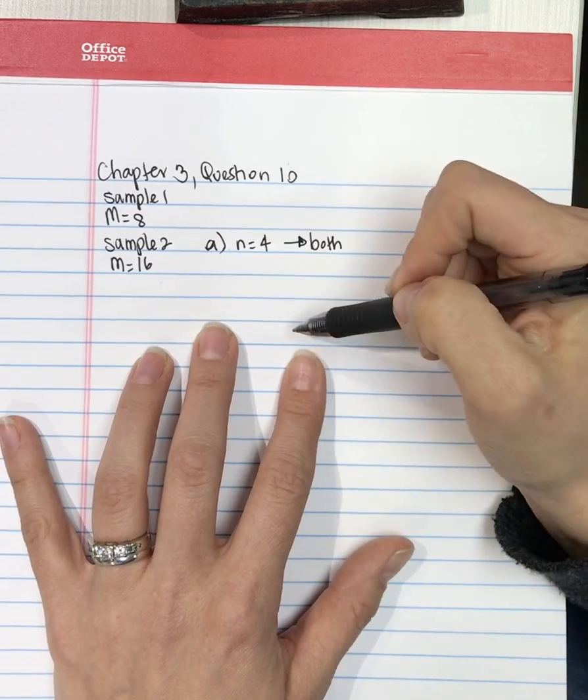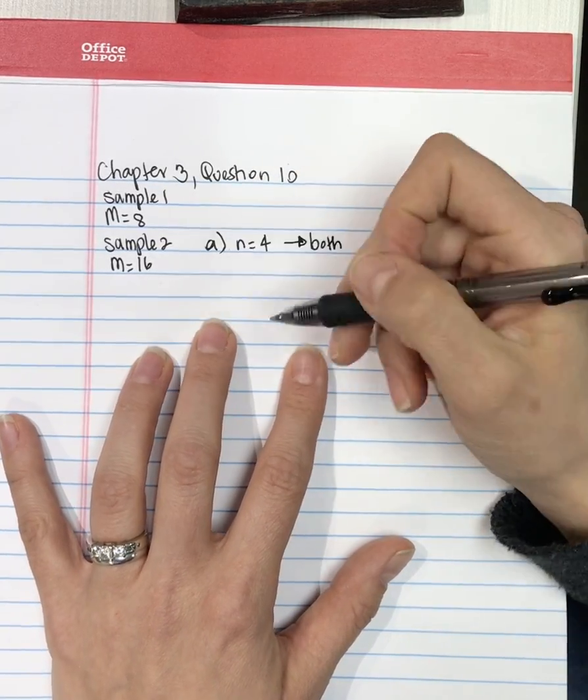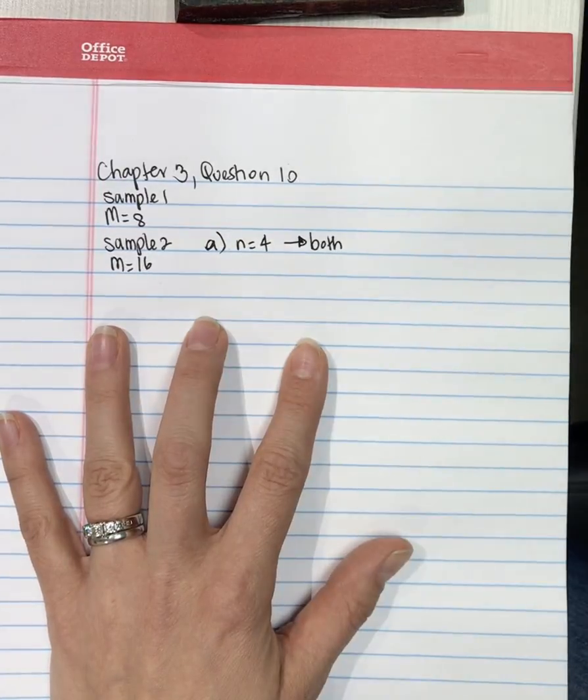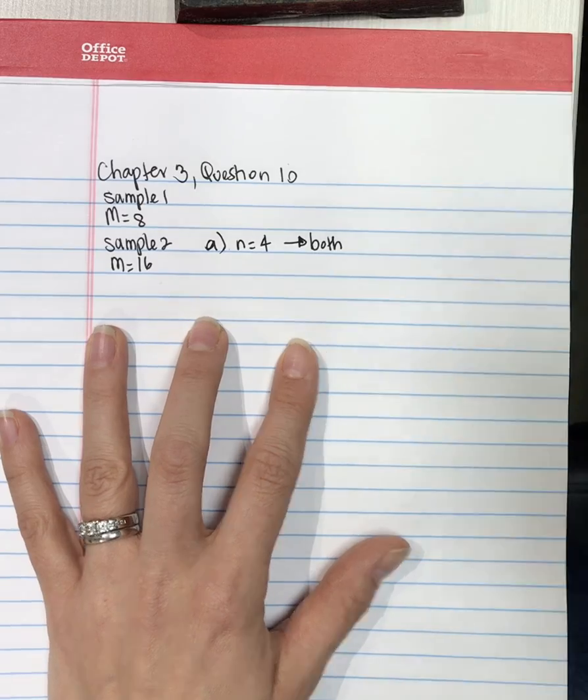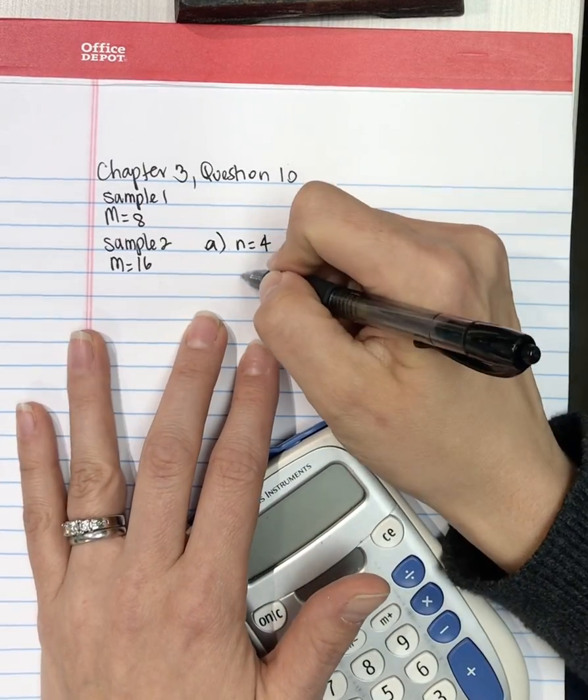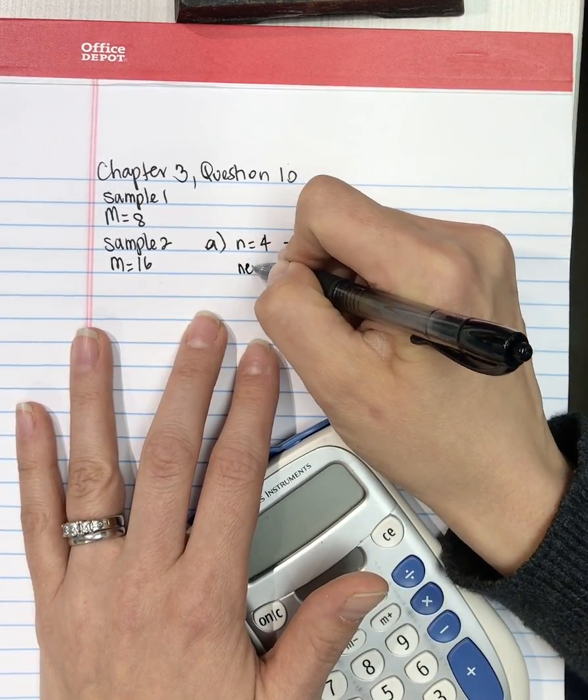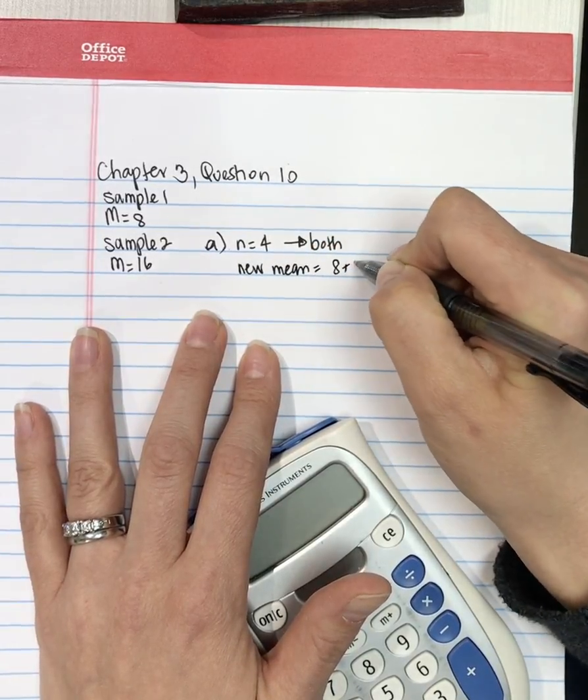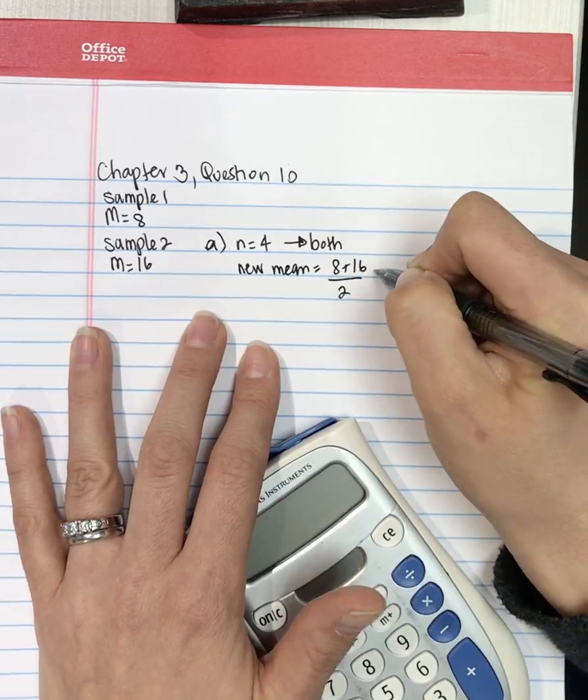And if the sample sizes are the same, then this is a straightforward question. What we can do is add these two means together and then divide by 2. So the new mean equals 8 plus 16 divided by 2.